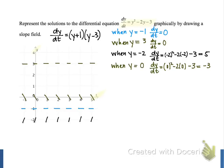We will continue this process for y equals 1, y equals 2, and y equals 4, evaluating dy/dt and then drawing the little tangent lines. You might want to pause this screencast for a moment, try these three y values on your own, create your own slope field, and then resume the screencast so we can compare our results.